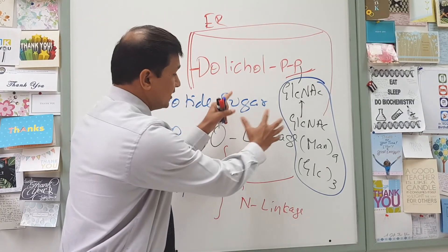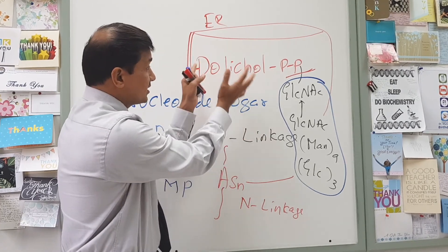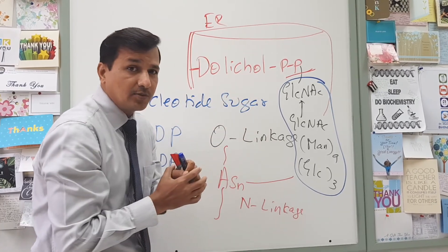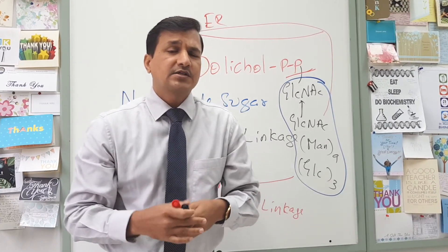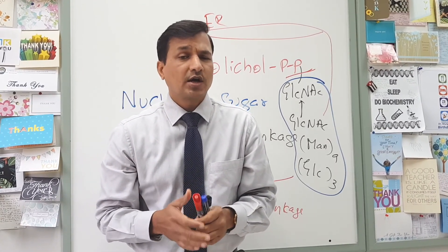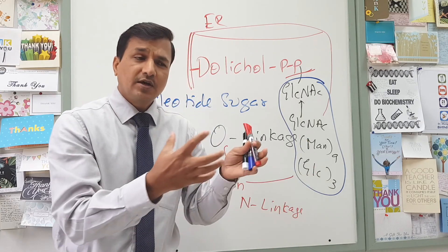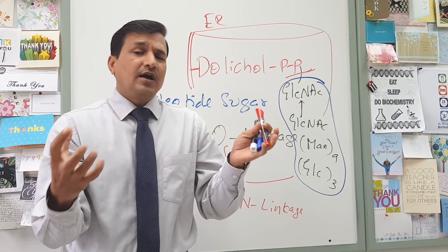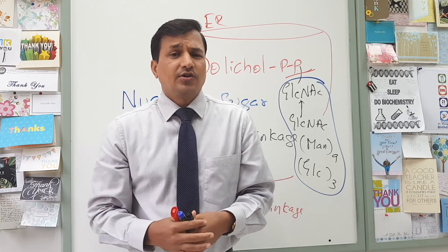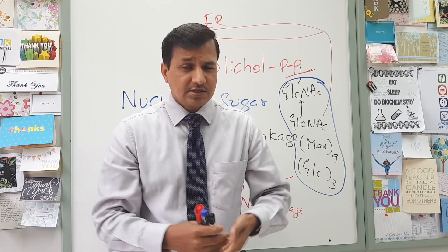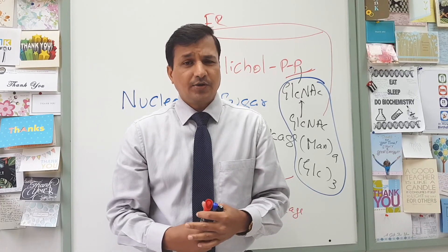Once N-linked and O-linked glycoproteins are synthesized in the lumen of the endoplasmic reticulum, they move into the Golgi complex. Further processing of the carbohydrate unit occurs there, and then they move into the trans-Golgi, from where they go out via secretory vesicles. This is how glycoproteins are synthesized and secreted.